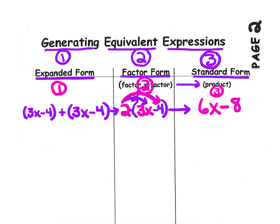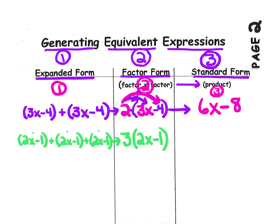Let's try another expression and move across the table to represent it in each of the forms. Let's start again with expanded form. Please write down 2x minus 1, plus 2x minus 1, plus 2x minus 1. Clearly this is expanded form — we can see it's repeated addition. We take this quantity 3 times, so we're going to write it as a multiplication problem: 3 times the quantity 2x minus 1. That's factor form.